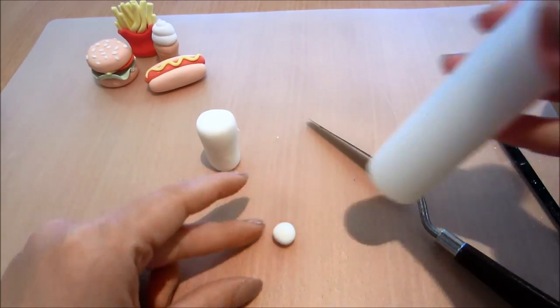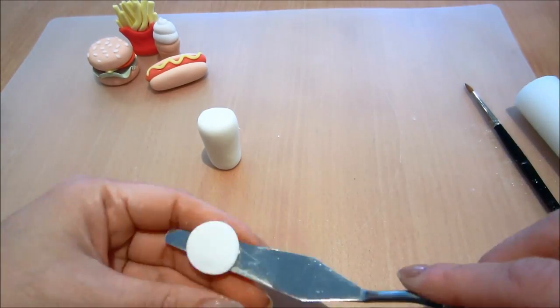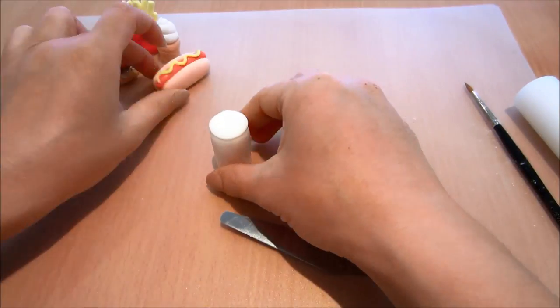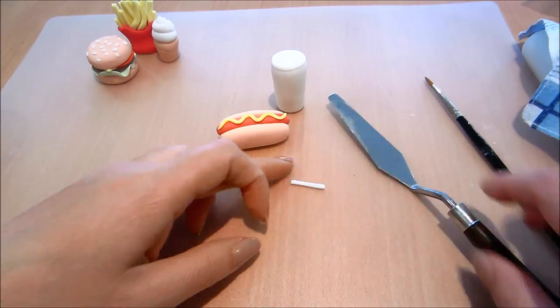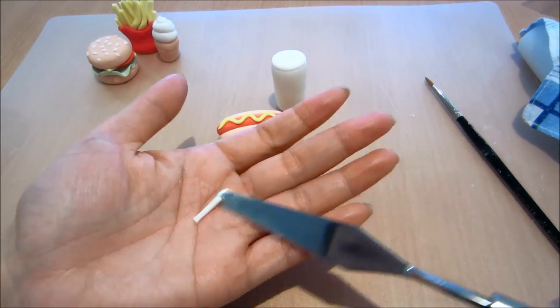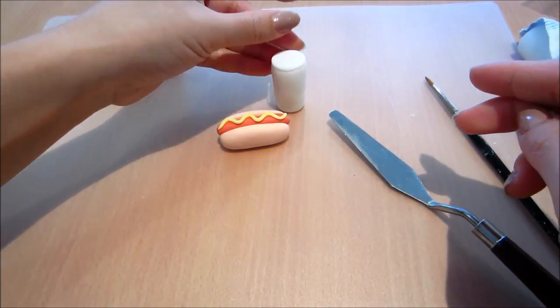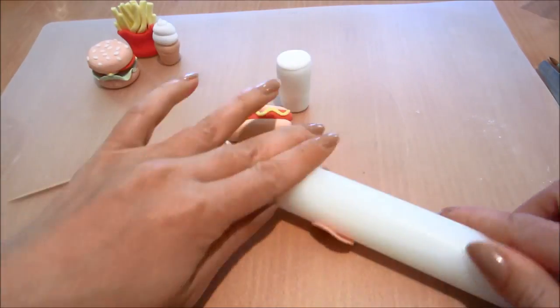Using a little bit of white fondant and just flattening it out to form the top of the drink. Now I've rolled out a tiny strip of white fondant and I've cut it down to a small portion to form the straw. Just leaving it to dry for about 10 minutes.